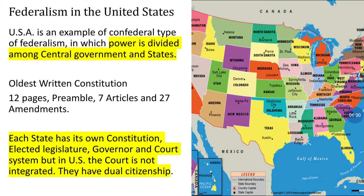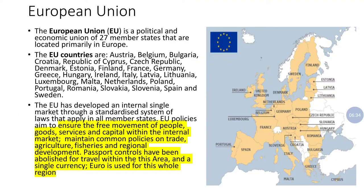So this is the confederal system as studied in the USA. Now moving to the confederal system of the European Union. The European Union, as you all know, is a regional union. It was created so that trade could be promoted in that particular region.